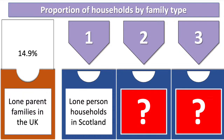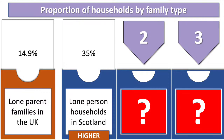We've got a mix of highs and lows — shall we look? It's quite a bit higher: 35%. Why might nearly a third of households in Scotland be lone person households? Suggestions: the elderly, population density, increased individualisation, increased life expectancy and the ageing population. Some really good suggestions there for why it might be at that level.